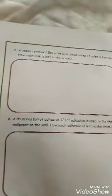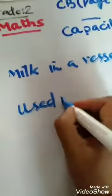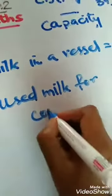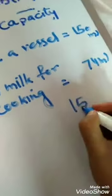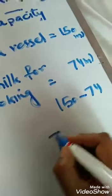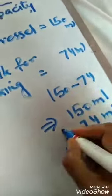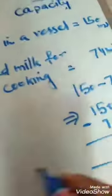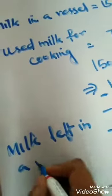That means we have to do the subtraction. So we can say that milk in a container or in a vessel is 150 ml. Used milk for cooking, this is 74 ml. So what do we have to do? We have to subtract 74 out of 150. This is in ml, so ml will come down. As you know we have to see the left milk, milk left in a vessel or a container.